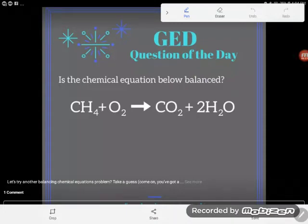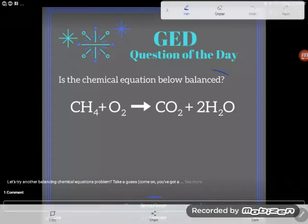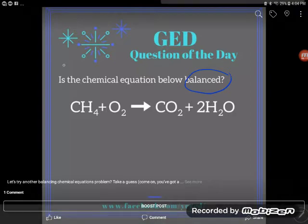Hey GED students, it's GED question of the day time and we're doing some more science. Our question asks: is the chemical equation below balanced? I would remind you guys that balanced means that we have the same number of atoms of each element on both sides of the equation.